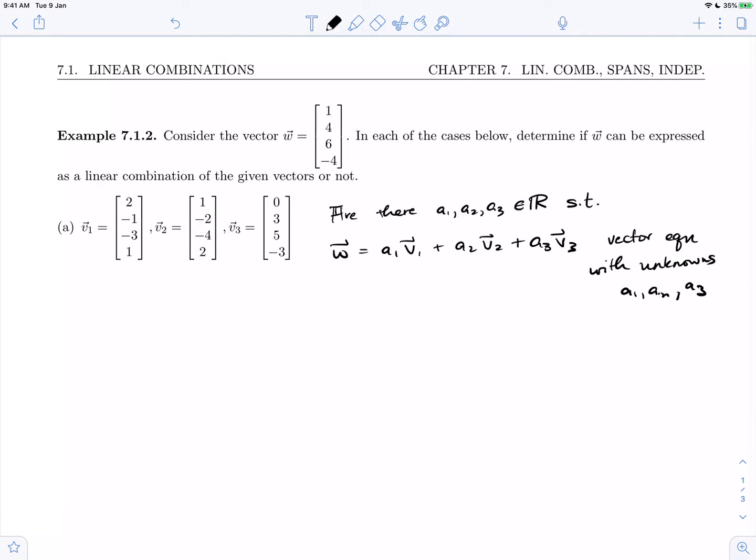If we want to solve this vector equation, we can write in the components of the vectors that we know. So w equals 1, 4, 6, minus 4 equals a1 times v1 which is 2, minus 1, minus 3, 1, plus a2 times 1, minus 2, minus 4, 2, plus a3 times 0, 3, 5, minus 3.